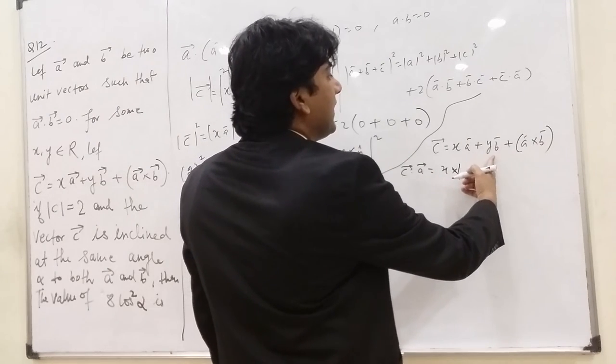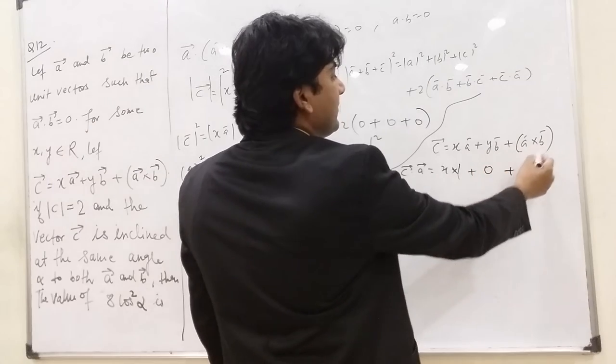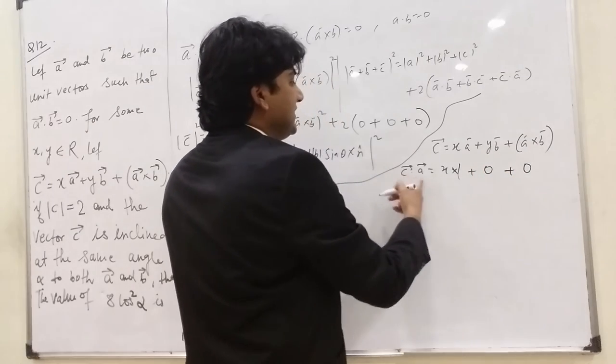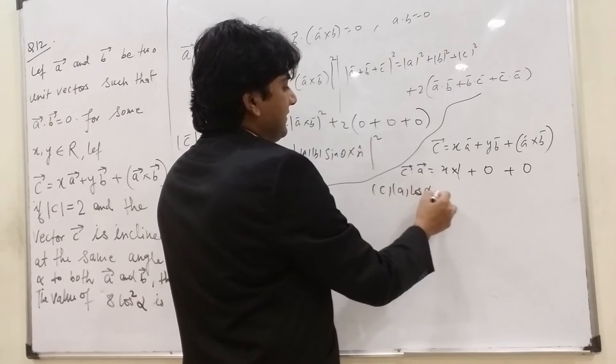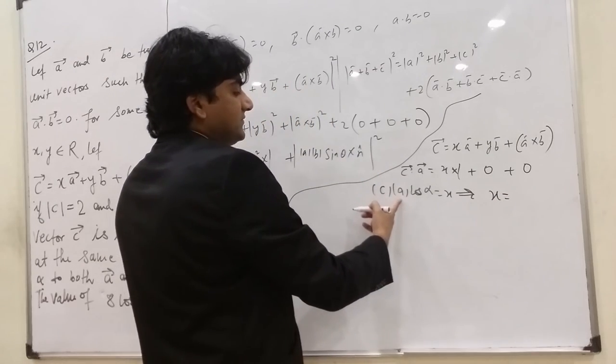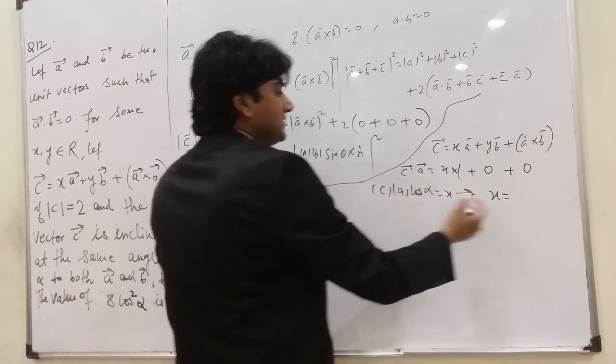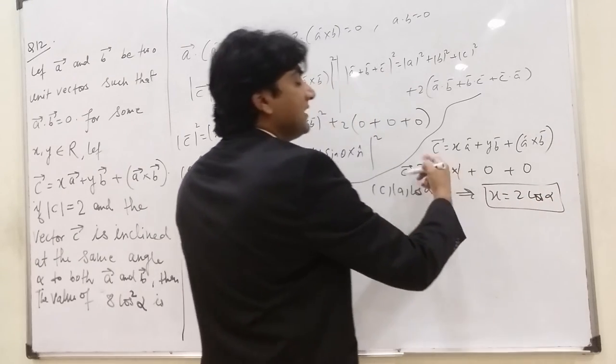Now y B dot A that is 0. A cross B dot A that is also 0. And C dot A is mod C, mod A, and cos alpha which is x. So from here, we got mod C is 2. A, magnitude of A is 1. So we got 2 cos alpha here.